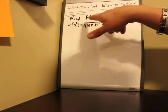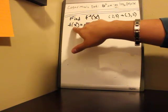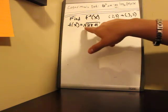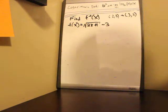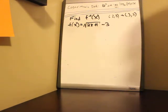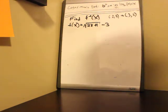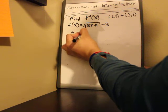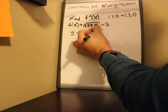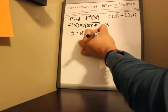So we've got to find the inverse of f of x. Luckily for us, we know what f of x is. We know it's the square root of 2x plus 1 minus 3. Now, a lot of you requested problems with square roots, so this is why I wanted to do this problem. So the first thing I want to do is just rewrite this as y equals the square root of 2x plus 1 minus 3.